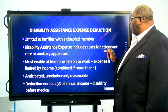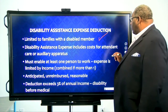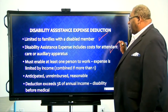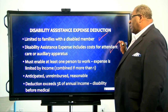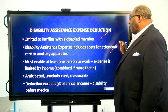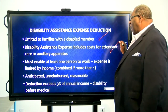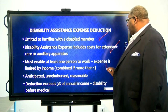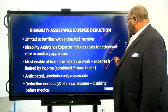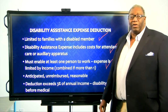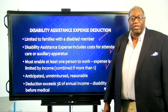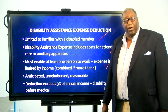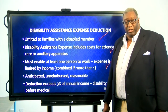So, a disabled member in the household — we can account for attendant care or auxiliary apparatus — and someone has to go to work. These expenses have to be anticipated, unreimbursed, and reasonable.